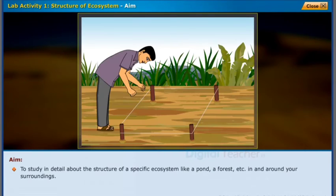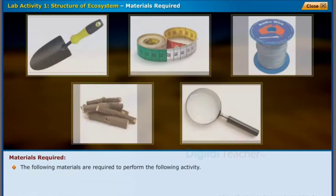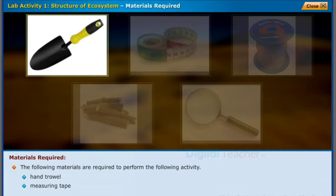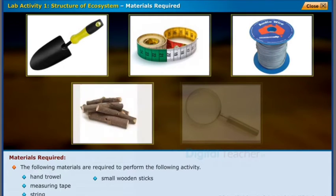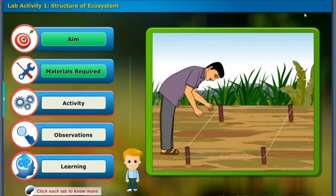To study in detail about the structure of a specific ecosystem like a pond, a forest, etc., in and around your surroundings, the following materials are required: hand trowel, measuring tape, string, small wooden sticks, and a hand lens.